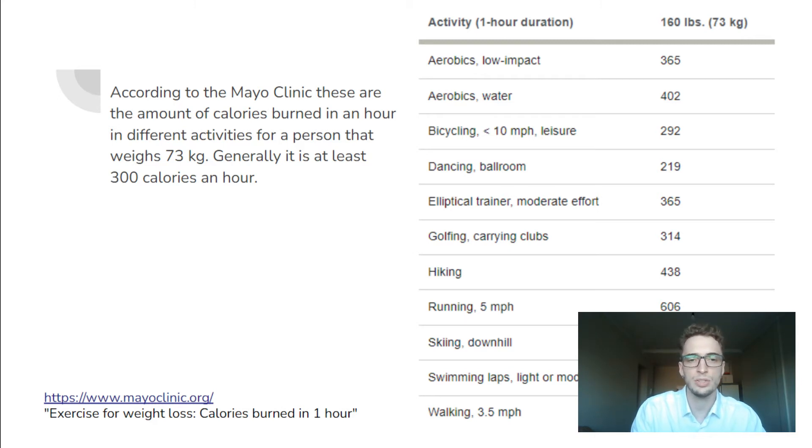As we can see, in general physical activities burn at least 300 calories per hour. So our parameter to differentiate physical activities from normal activity is that the physical activity consumes at least 300 calories per hour or its equivalent.